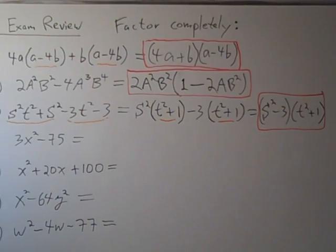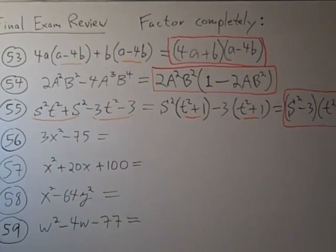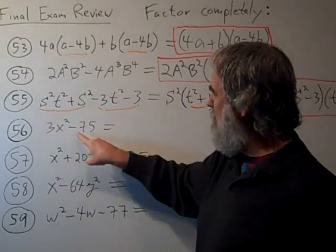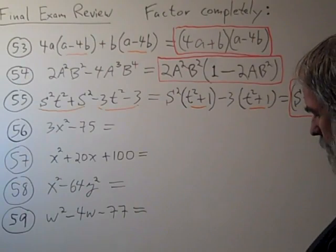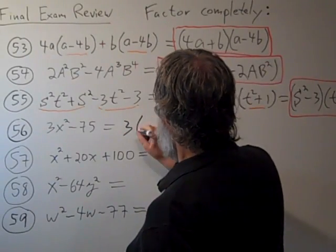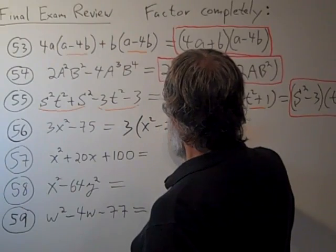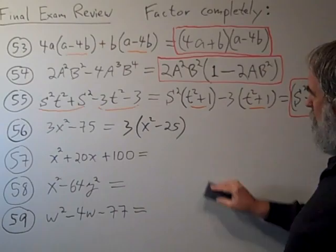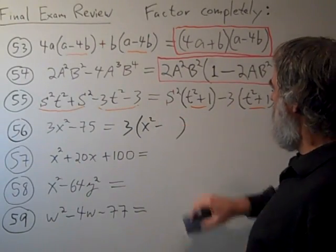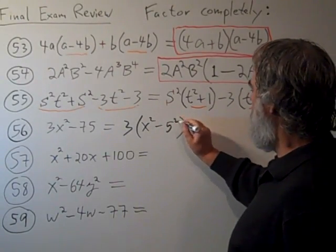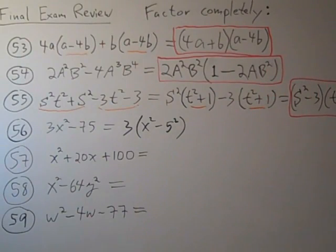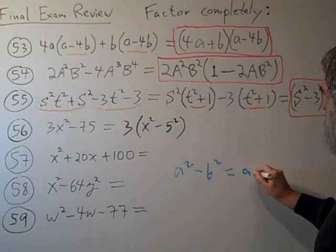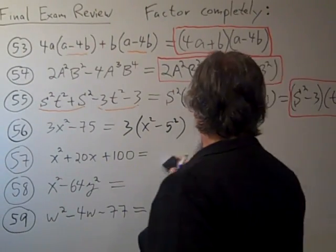In our next problem, problem 56, notice that we've got a difference of, well, almost a difference of squares. Three divides into each of these first. Always factor out the greatest common factor, 3. That's x squared minus 25. 25 is 5 squared, so this is a difference of squares now. And remember the formula for the difference of squares. Anytime you have a squared minus b squared, it's a plus b times a minus b.